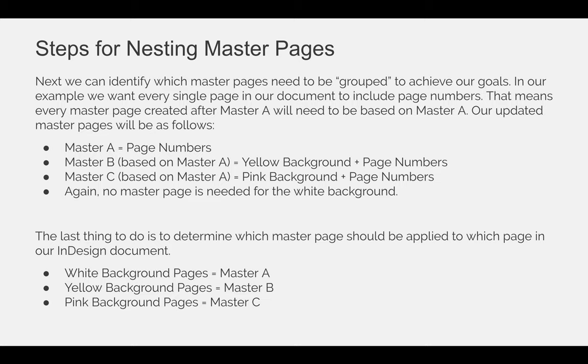Master A will contain automatic page numbering. Master B will be based on Master A, which means that it will contain the yellow background plus the page numbers that will flow onto it from Master A. The same thing will happen with Master C — it will be based on Master A, have the pink background, and the page numbers that automatically flow onto it from Master A.